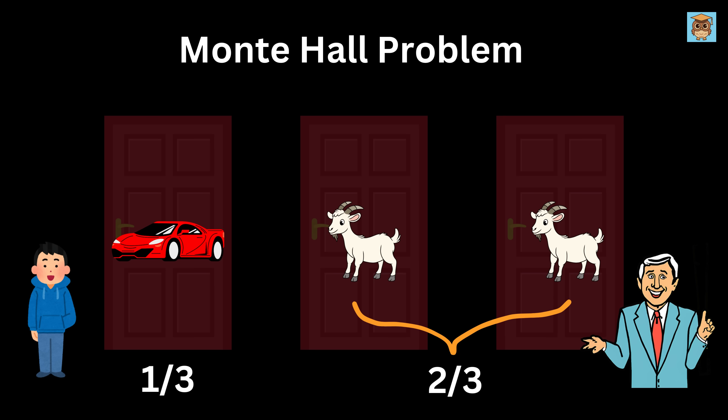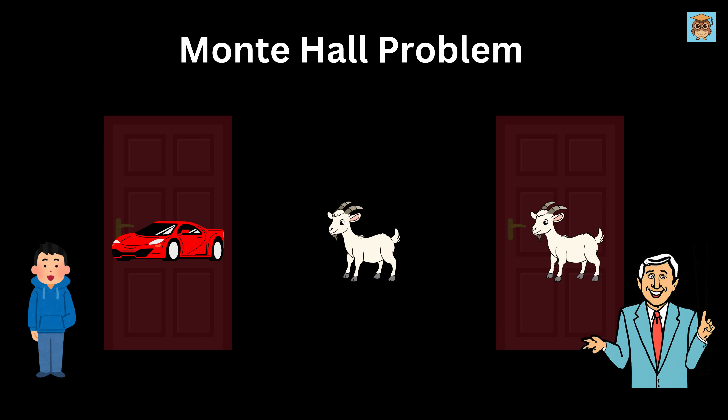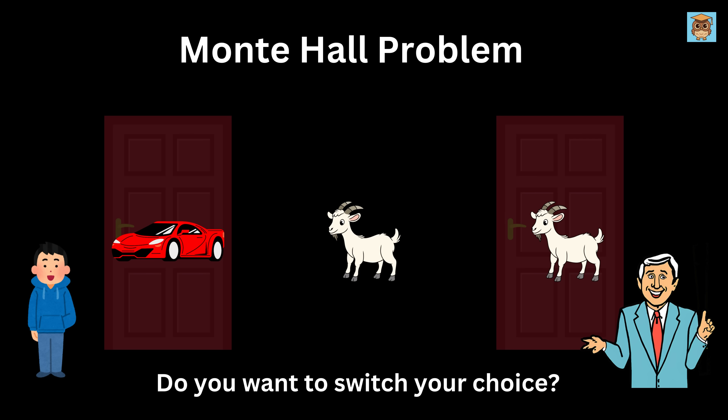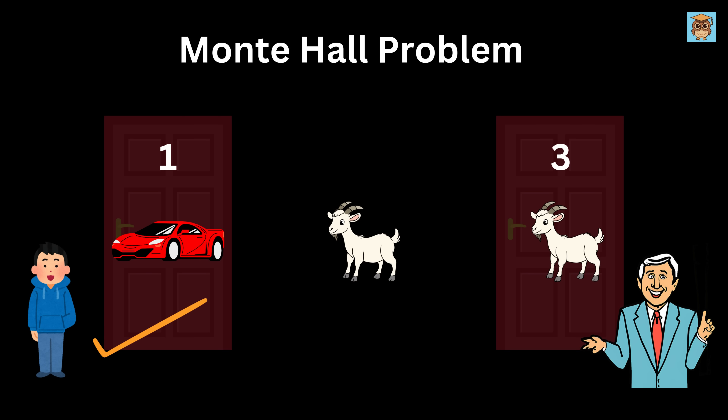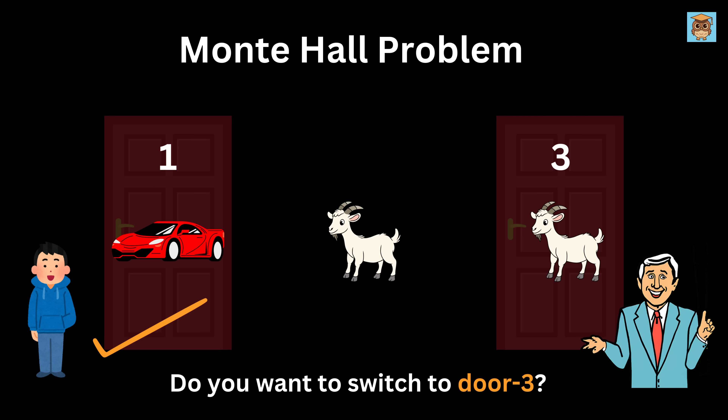Then the host, who knows exactly what is behind each door, opens one of the remaining doors, where there is always a goat, and offers you the chance to switch to the other unopened door. For example, if you choose door 1 and the host opens door 2 to reveal a goat, then he offers you the chance to switch to door 3.